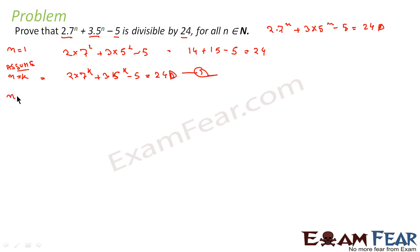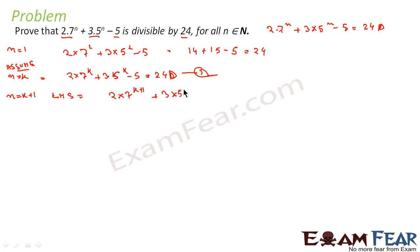Now we have to prove that the statement is true for n is equal to k plus 1. For n equal to k plus 1, the LHS becomes 2 into 7 to the power k plus 1 plus 3 into 5 to the power k plus 1 minus 5.